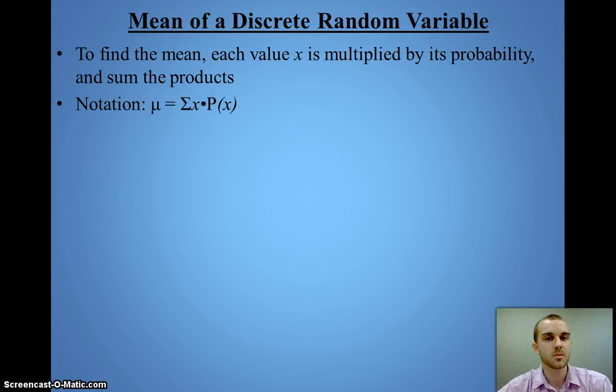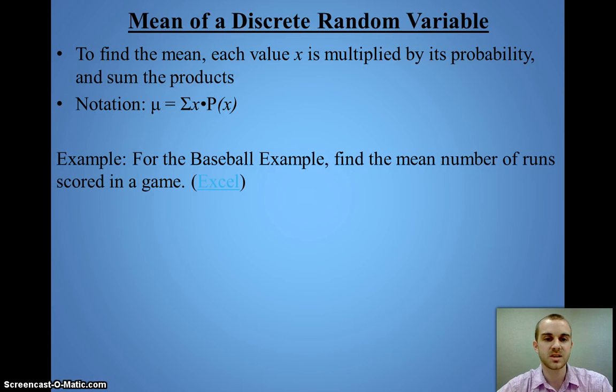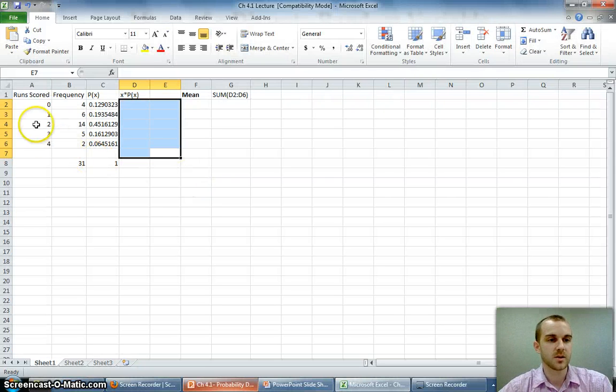Now, we can also find the mean with a specific formula where we take each random variable, multiply it by its probability, and add all those values together. Let's look at the baseball example and use Excel to help us. If I look in Excel, I have my random variables, my frequencies, my probabilities.